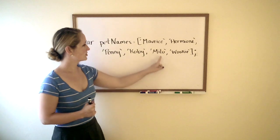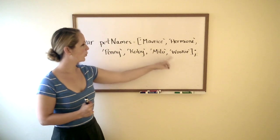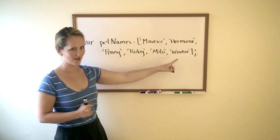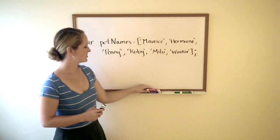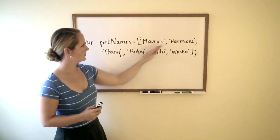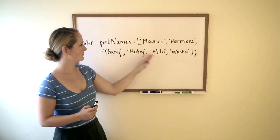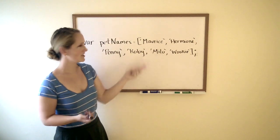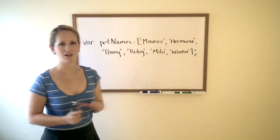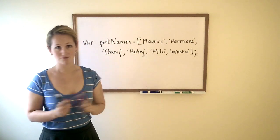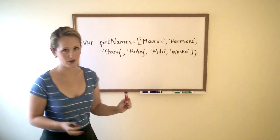If we want to return 'Wookiee', we would count: one, two, three, four, five, six. You might think that if you did pet names six, that would return Wookiee, but that's actually not how it works.